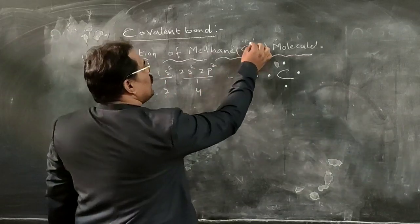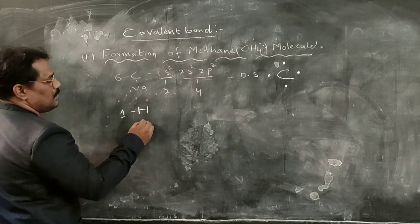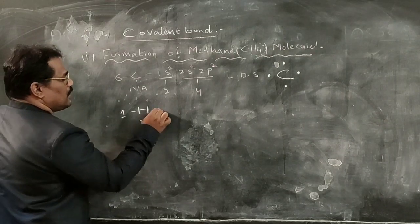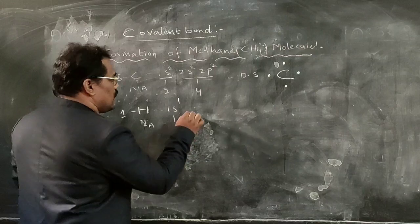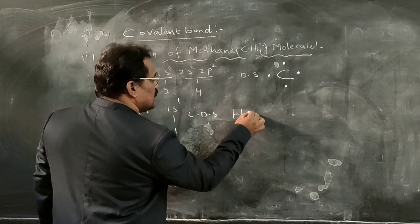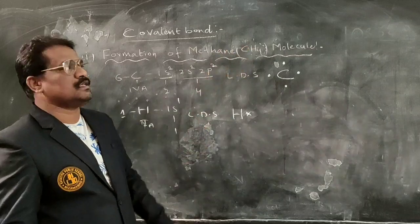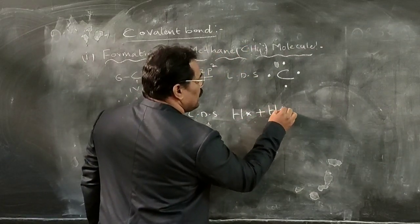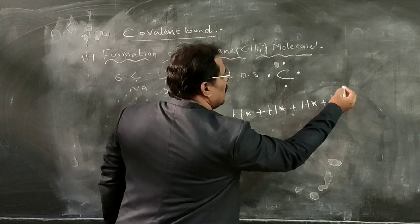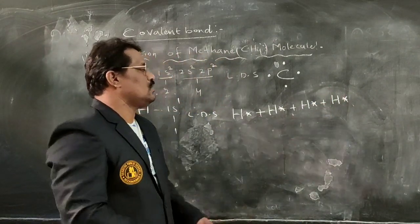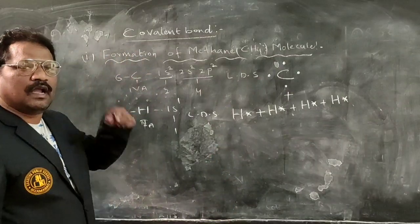This carbon will overlap with 4 hydrogen atoms. For hydrogen, whose atomic number is 1, belonging to the first A group element, the electronic configuration is 1s1, having only 1 electron. The Lewis dot structure of hydrogen shows hydrogen with one electron. Here we require 4 hydrogen atoms, so we bring 4 hydrogens.